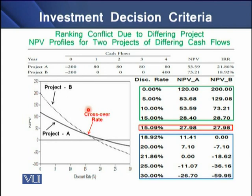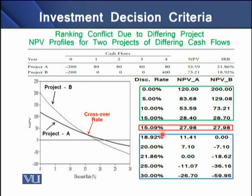Looking at the NPV profiles, the point where the NPV lines of the two projects cross each other is called the crossover rate. This crossover rate is 15.09%, where both projects have an equal NPV of $27.98%. From 0% to the crossover rate, Project B has a higher NPV than Project A, but beyond the crossover rate, Project A has a higher NPV than Project B.